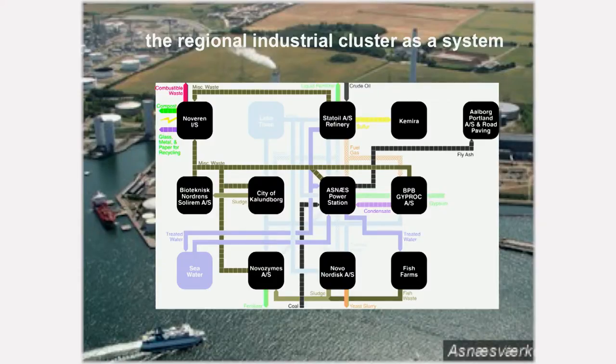This animation also shows that you can draw system boundaries in many different ways. Depending on what system you think is important, your definition of what ecological sustainability is or should be will differ. The ecological sustainability of a firm is a very different thing from the sustainability of a city. Let me show you a couple of system boundaries that people have drawn and which have proven to be quite powerful.